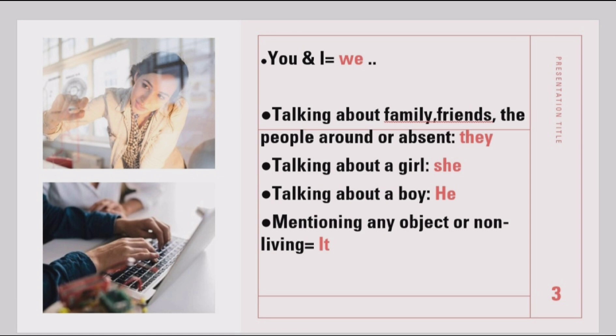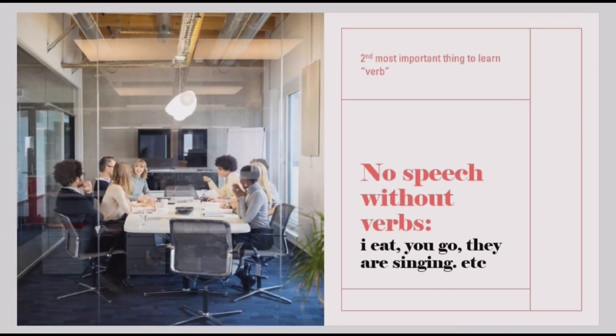Next, when we talk about our family, friends, or people who are absent — for example, if I am talking about my sisters and brothers, I would say: they are my family. They are very good to me. They live in my neighborhood. They live in the same village. They are quite good people. When the people are absent around me, I would use 'they'. When talking about any girl, I use 'she'; any boy, I use 'he'; and any object or non-living thing, I use 'it'.